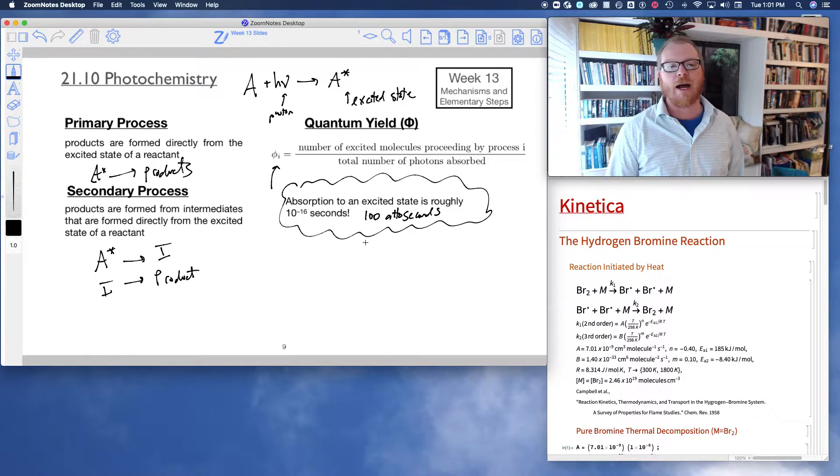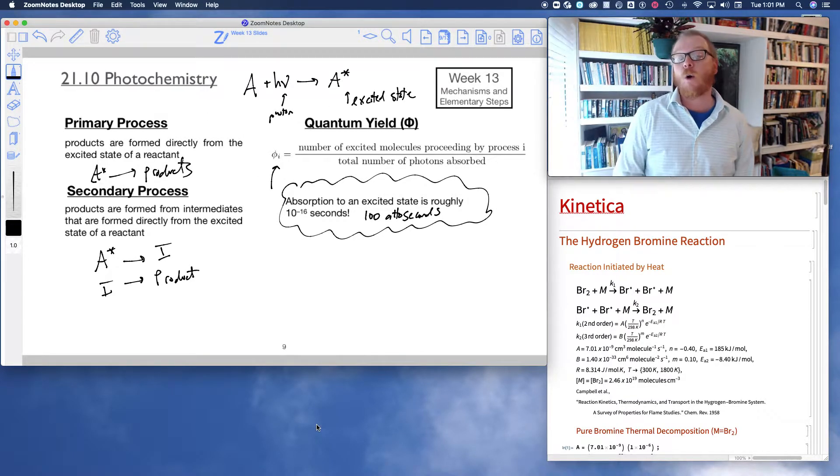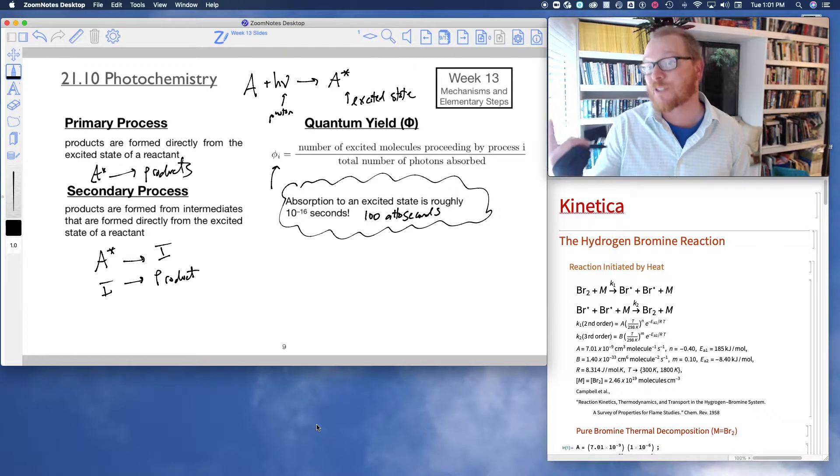So for example, suppose I irradiate A with 100 photons. And perhaps maybe only one of those photons leads into doing photochemistry. So in other words, one out of those 100 photons went on to make an excited state, which then went on to make products. That would be a quantum yield of 1%, right? One out of 100 photons.